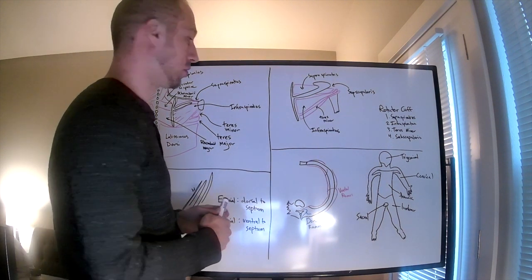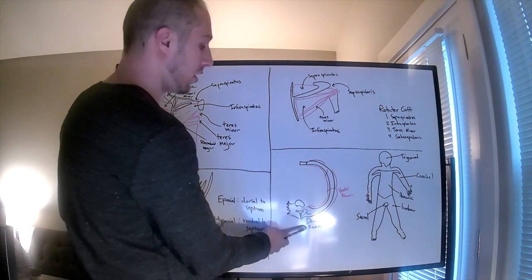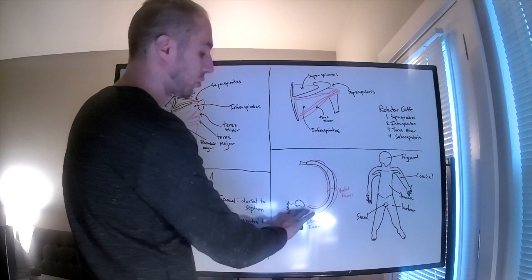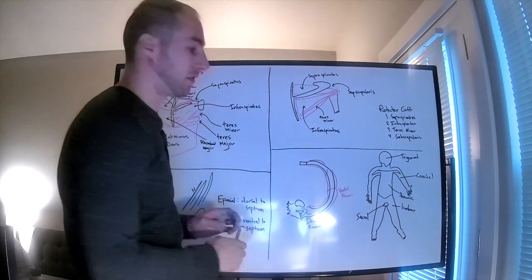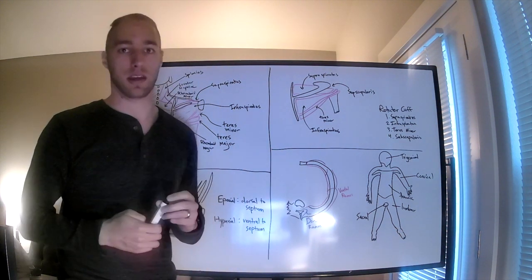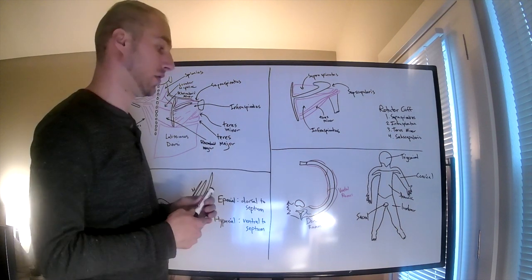Discussing dermatomes, which are important in this section, we have dorsal and ventral rami which will feed different parts of the innervation to the skin.